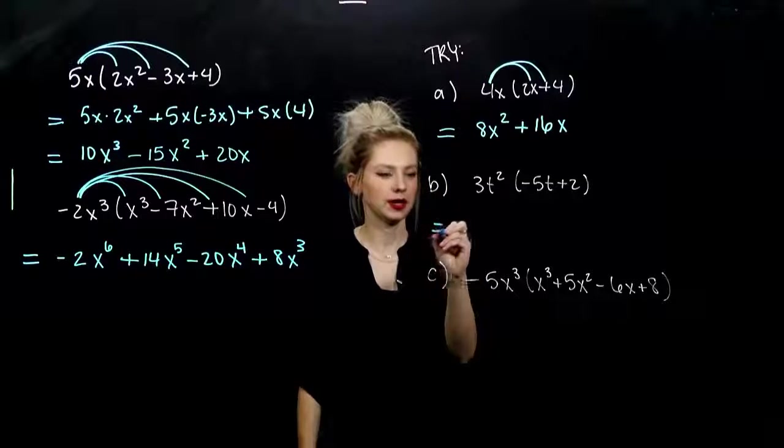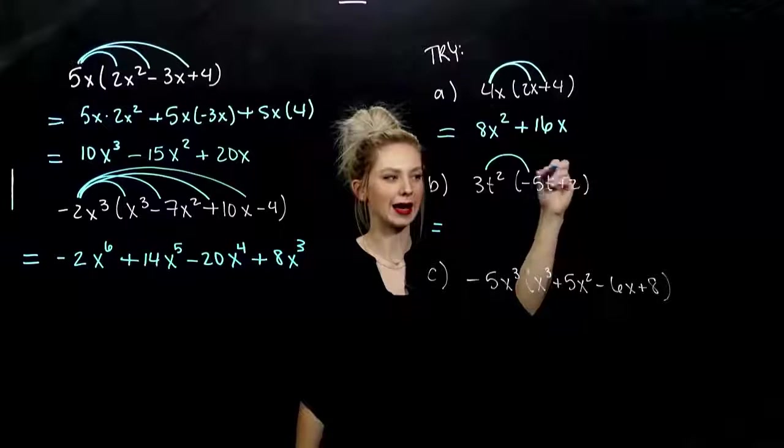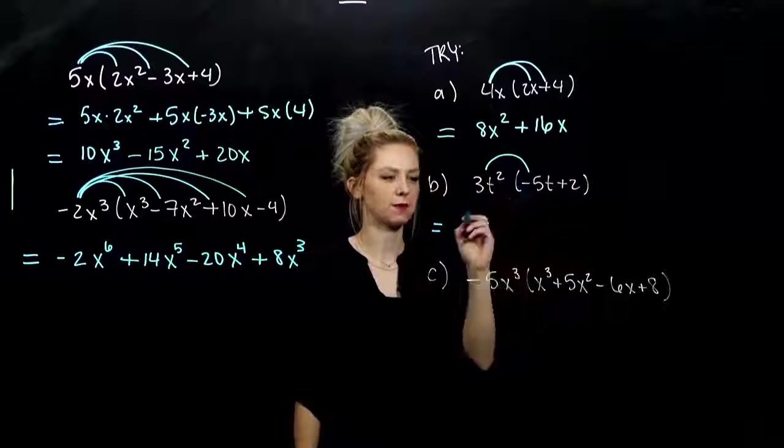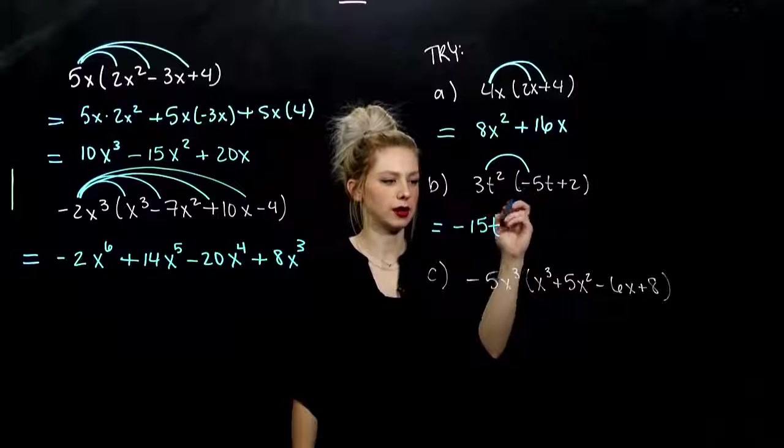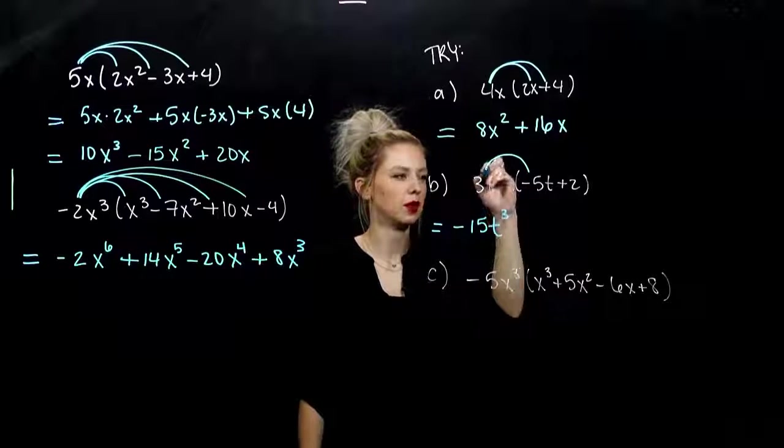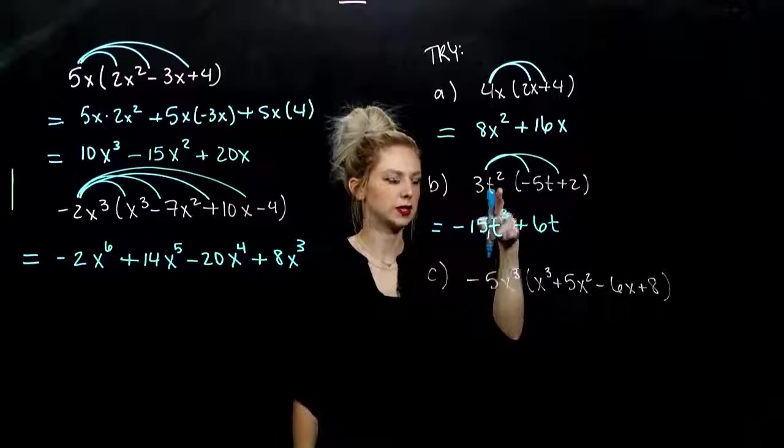For part b. Again, distributing the monomial to every single term in my binomial here. So, 3 times negative 5. Negative 15. How many factors of t am I looking at? 3 of them. 3 times 2? 6. How many factors of t? Only 2.